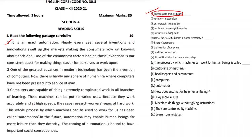Nearly every year, several inventions and innovations fill up the markets, making consumers move on knowing about each one. One of the commonest factors behind those inventions is our consistent desire for making things easier for ourselves to work upon. So inventions are promoted due to making things easier. Without going to the options, we get the answer here. Now we choose from the MCQs: 'Our interest in making things easier' — this is the exact answer.